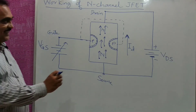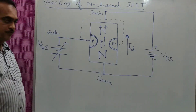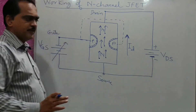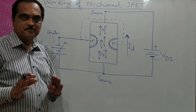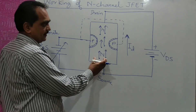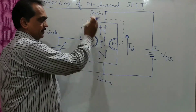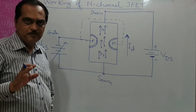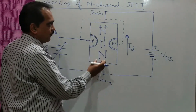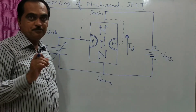When you increase VDS — keeping VGS at zero — at a specific point called the pinch-off voltage, you will get a constant flow of electrons going from source to drain. Initially the current increases, but at that specific pinch-off voltage it remains constant. This constant flow represents the maximum drain current.